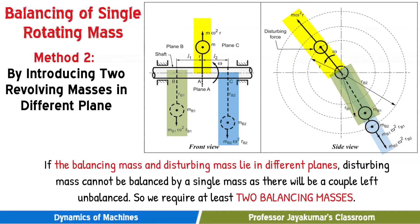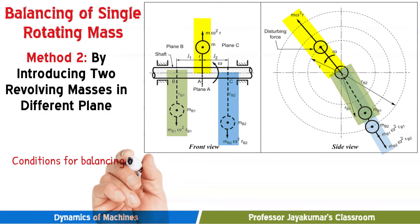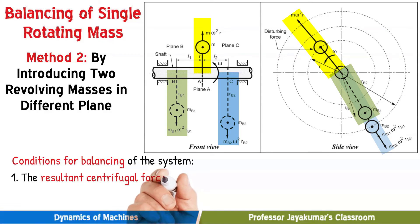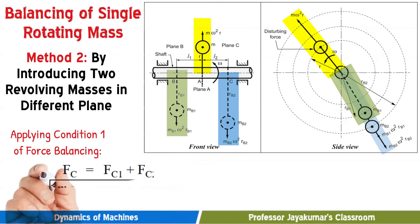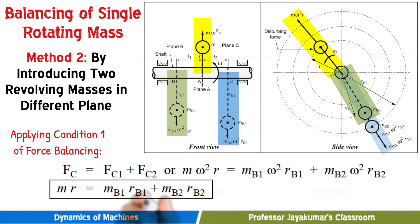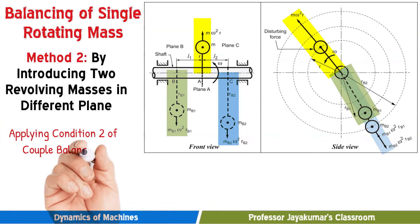Since forces are lying in different planes, it will induce couple. So for complete balancing of the system, we need to take care of two things. The one is balancing of forces. The second one is balancing of couples. Now applying condition 1 of force balancing, we will get unbalanced force m omega square r is equal to sum of the centrifugal forces due to two balancing masses mb1 omega square rb1 plus mb2 omega square rb2. Equating them, we get equation number 1.